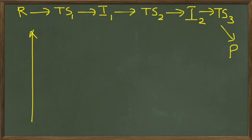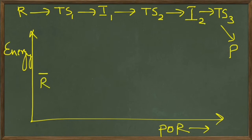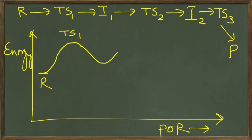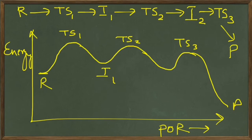We will have the y-axis and the x-axis. On the x-axis we have the progress of reaction, on the y-axis we have energy. Starting with the reactant, we make the first hill for transition state 1, then the second hill for transition state 2, then another hill for transition state 3, and then we reach the product. In the first valley we have the first intermediate, and in the second valley we have the second intermediate.